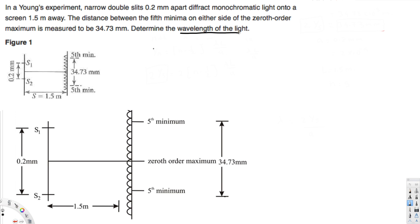Here the question is asking for the wavelength of the light, and we have the distance of the fifth minima from either side of the zeroth order. The zeroth order is the middle part. From either side, the total distance from fifth minimum to fifth minimum is 34.73 millimeters.